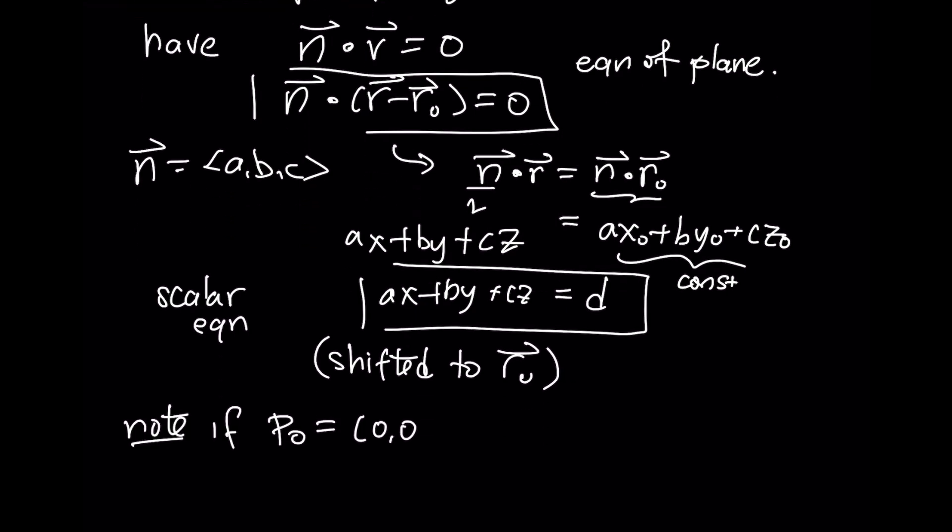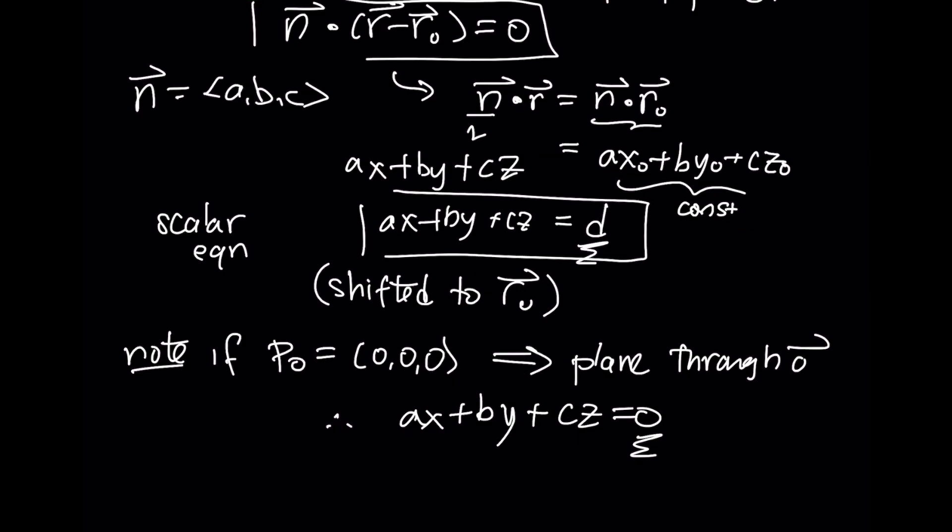Note, if this point on the plane is (0, 0, 0), the plane goes through the origin. And that means that the equation of the plane is simpler looking: AX + BY + CZ = 0. If there's a 0 on the right-hand side in this form, then it does go through the origin. If there is a non-zero number on the other side, then it does not go into the origin.